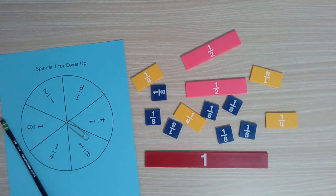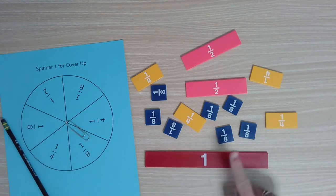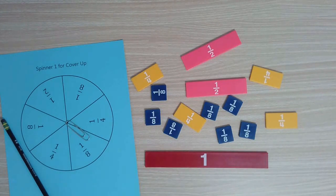I'm playing with a spinner that only has eighths, fourths, and halves because those are related and can make equivalent fractions. From my fraction tile kit, I've pulled out just the eighths, the fourths, and the halves.